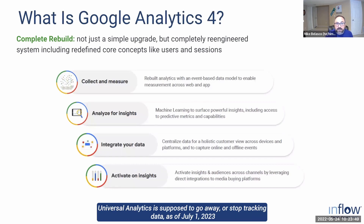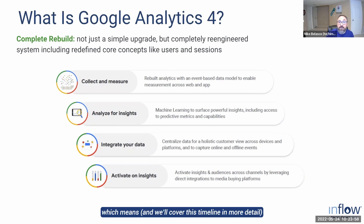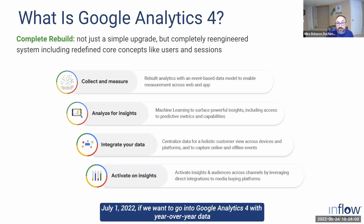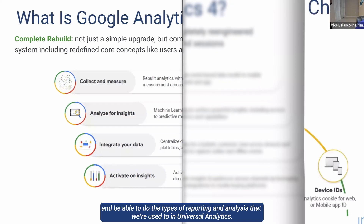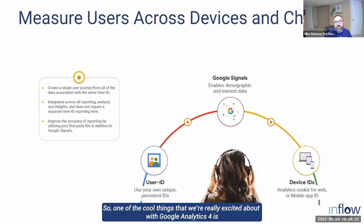Universal Analytics is supposed to stop tracking data as of July 1st, 2023. That means we only have until July 1st, 2022 if we want to go into Google Analytics 4 with year-over-year data and be able to do the types of reporting and analysis that we're used to in Universal Analytics.